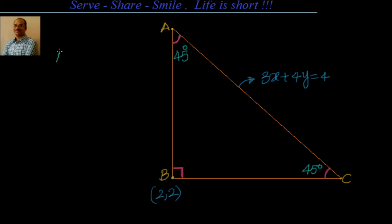What we have to find out is the equation of AB and the equation of BC. Now we know that AB and BC are perpendicular to each other. So if I am able to find out one, then I can easily find out the other by taking the negative reciprocal of the slope. So let me try to find out BC. For that, I will say the slope of BC is m. And we can find out the slope of this line.